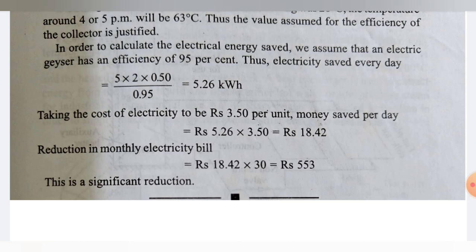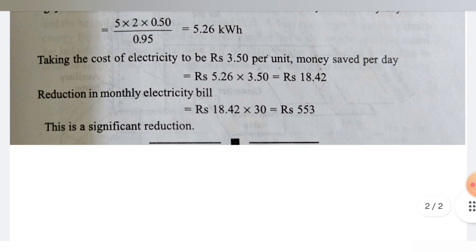Taking the cost of electricity to be Rs 3.50 per unit, money saved per day is Rs 5.26 × 3.50 = Rs 18.42. The reduction in monthly electrical bill will be Rs 18.42 per day × 30 days = Rs 553, which is a significant reduction.